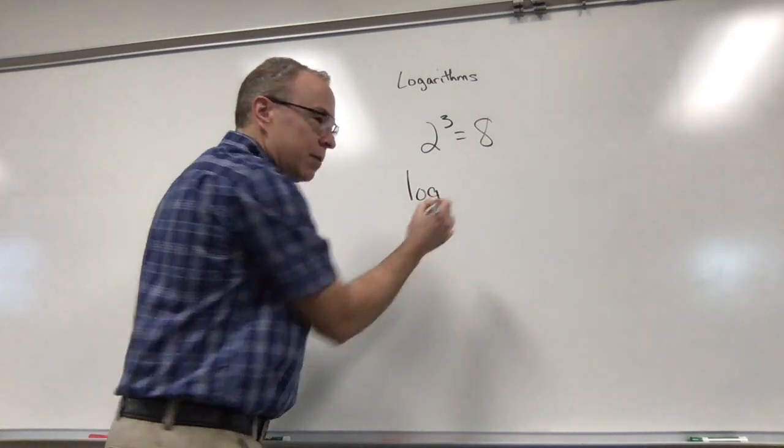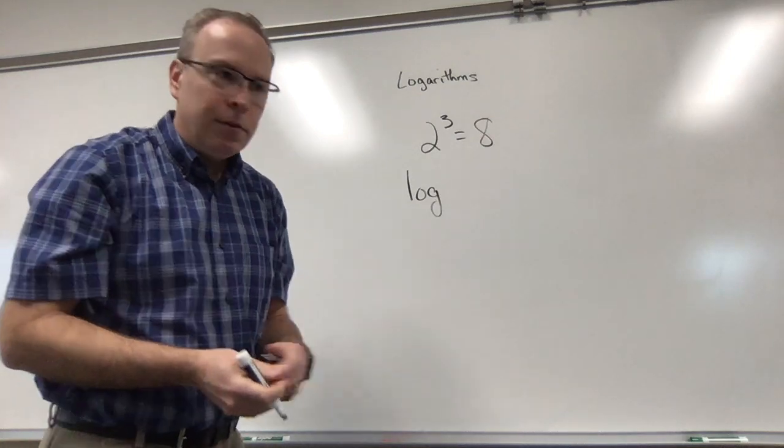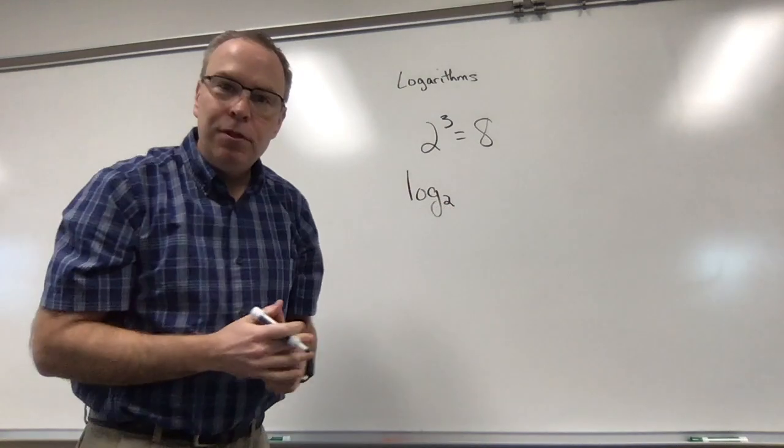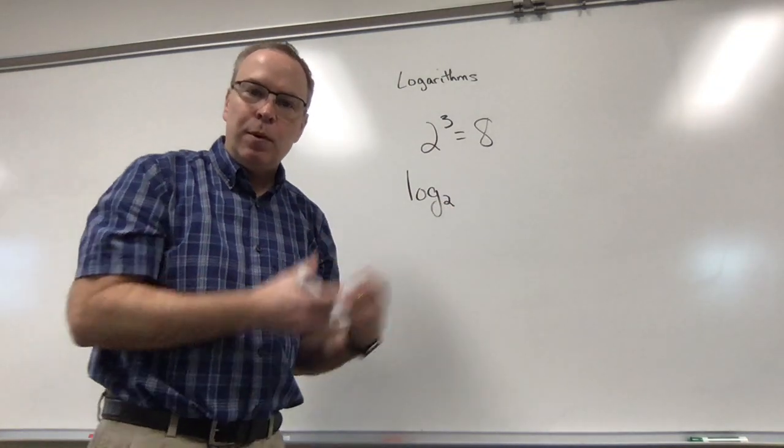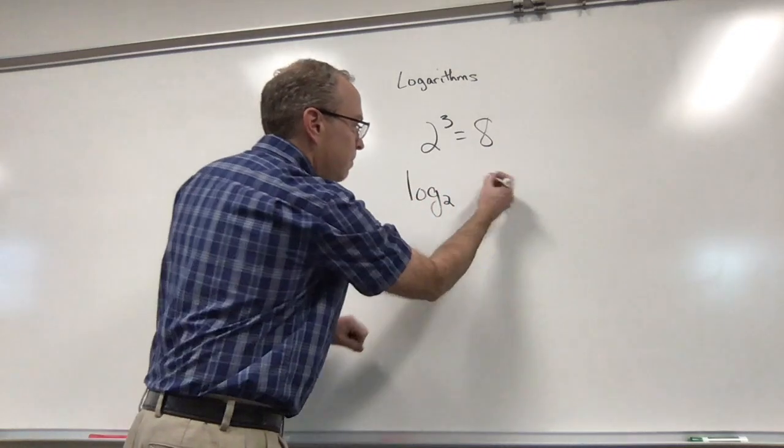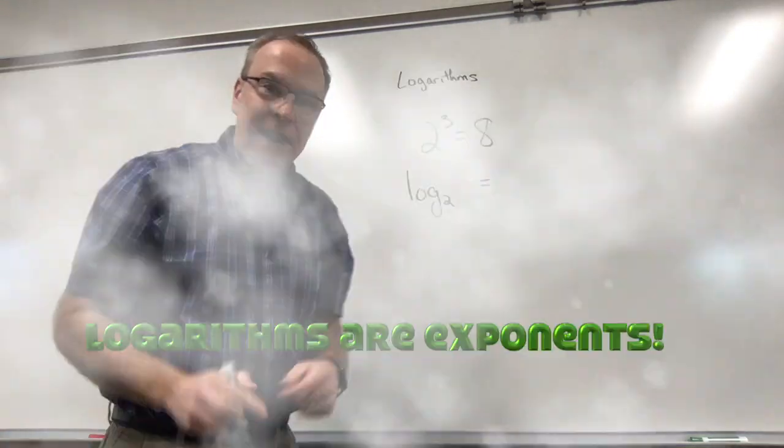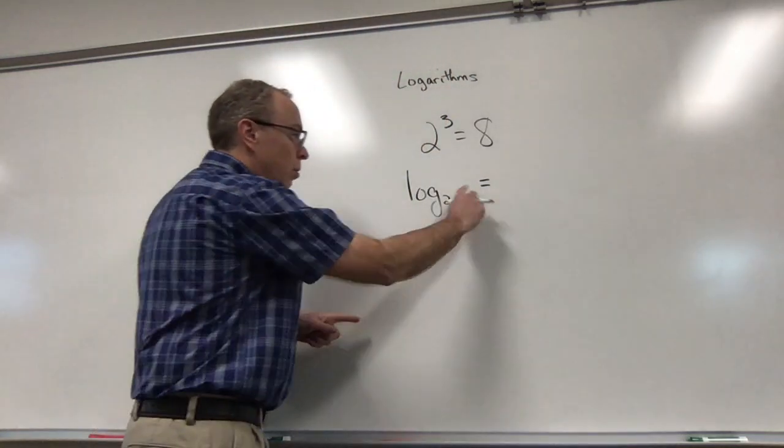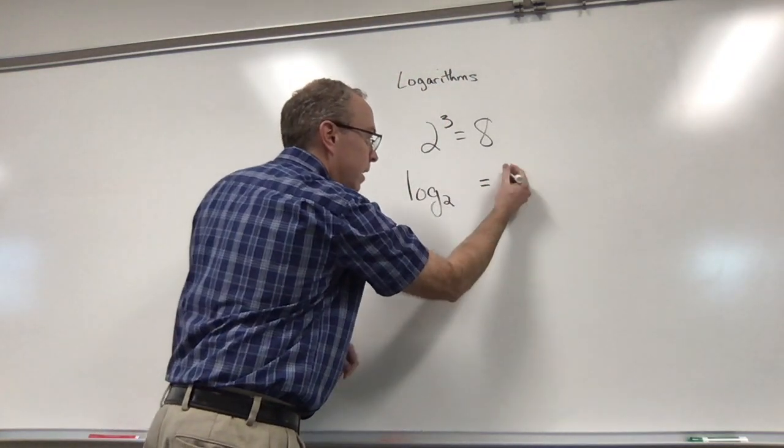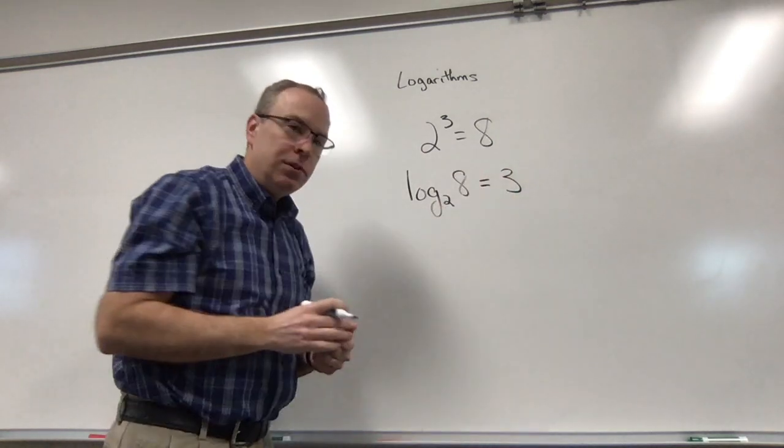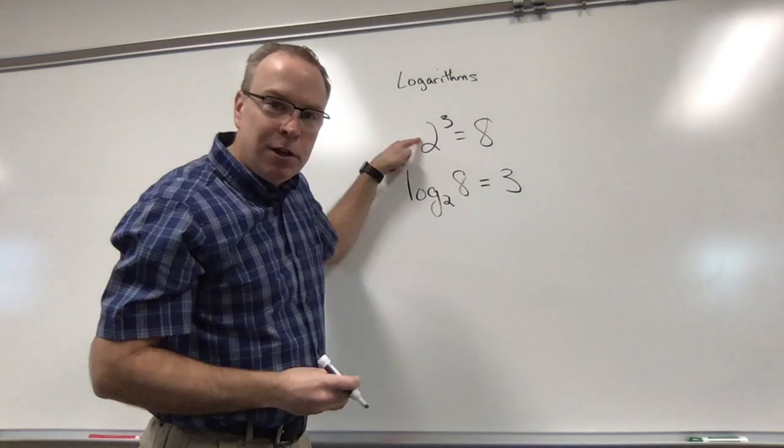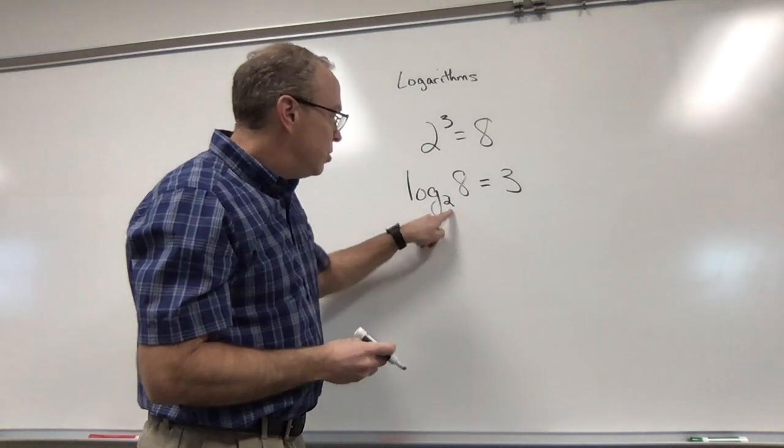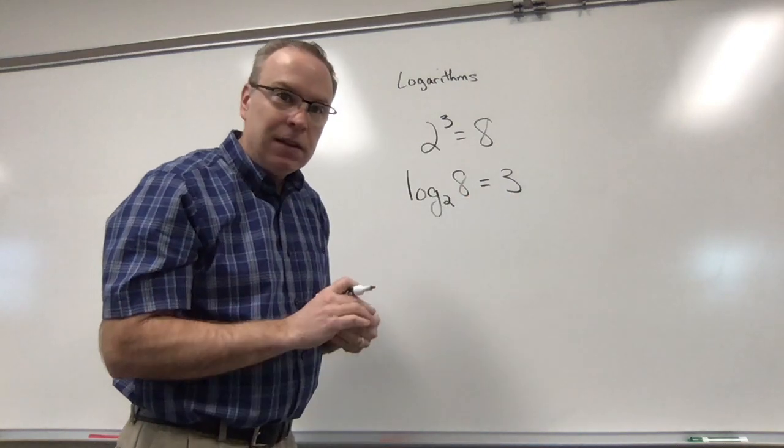So you write this 'log' - sometimes we call these logs instead of using the word logarithm all the time. The base is the number we put right down here, and that's called the base of the logarithm also. So we have log base 2. And what I need you to remember is that answers to logarithms are exponents. Answers to logarithms are exponents. So the exponent goes over here, that must mean the 8 goes there. So this is called exponential form, this is called logarithmic form or log form. Log base 2 of 8 is 3. That's a fact.